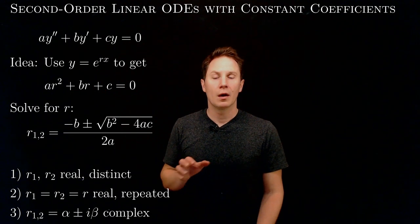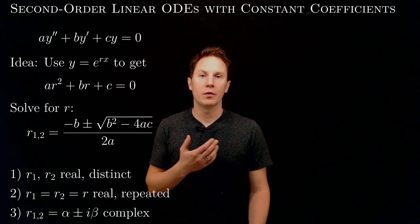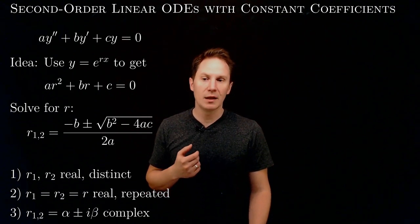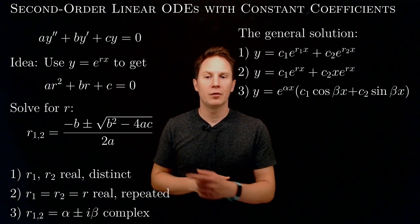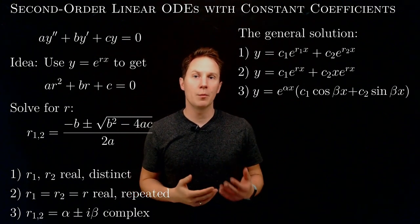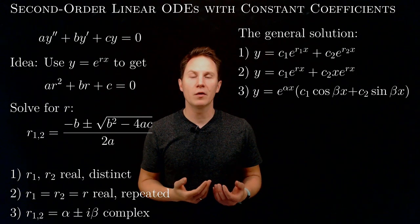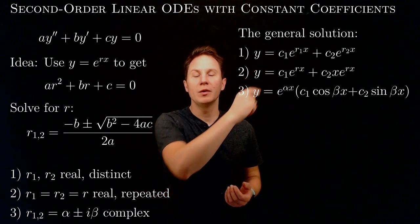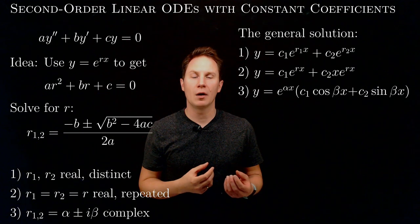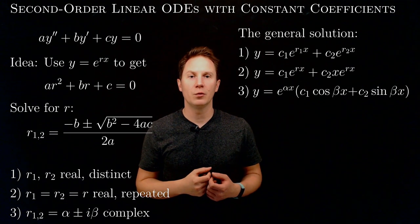Based on which of these three cases we find ourselves in, we have three types of general solutions to this linear ODE with constant coefficients. If we have two real distinct roots, then our general solution is a linear combination of e to the r1x and e to the r2x, meaning c1 times e to the r1x plus c2 times e to the r2x, where c1 and c2 are arbitrary coefficients.